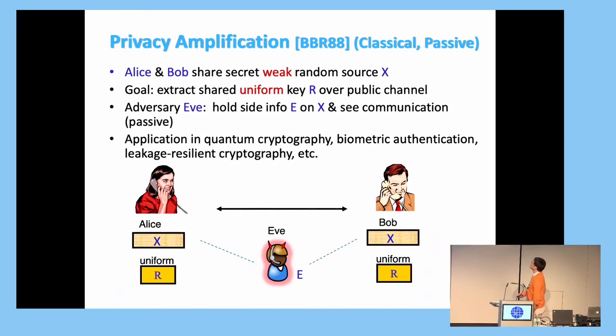So what is privacy identification? Well, privacy identification is a protocol where Alice and Bob share some weak secret X, and they want to extract some uniform random key R. And in a passive case, there is the eavesdropper Eve here that has a certain information about the shared randomness X.